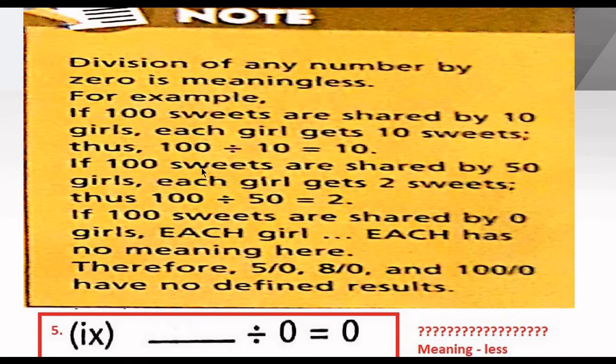If 100 sweets are shared by 50 girls, each girl gets 2 sweets. Thus 100 divided by 50 is equal to 2. If 100 sweets are shared by 0 girls, each girl has no meaning here. Therefore 5 divided by 0 and 8 divided by 0 and 100 divided by 0 have no definite result.